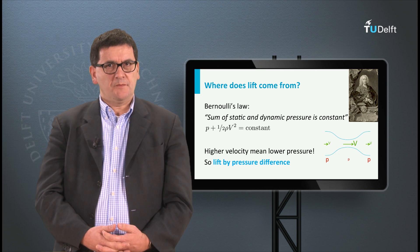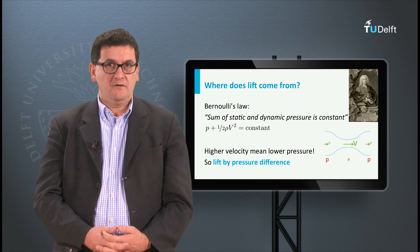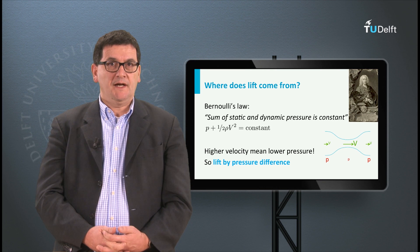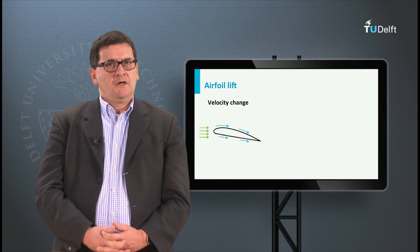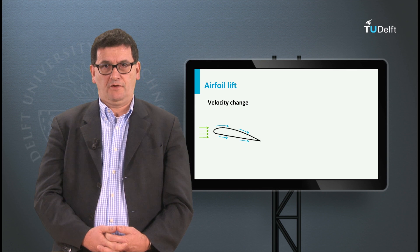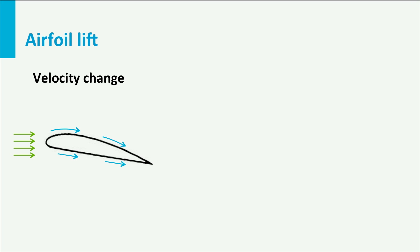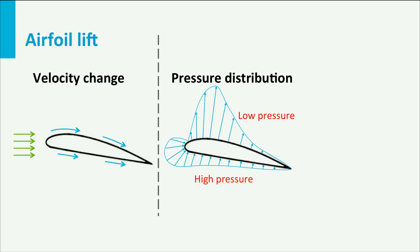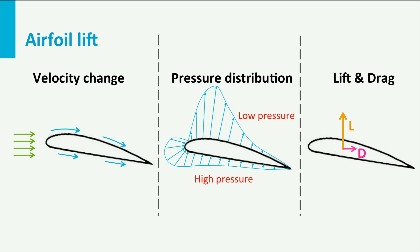Note that Bernoulli's law is applicable for particular situations only, for example for low airspeed and incompressible media. For an airfoil, the airspeed over the airfoil is usually higher than the airspeed below the airfoil. This is due to the camber of the airfoil and the angle of attack. This results in a pressure distribution: there is some overpressure under the airfoil but significant underpressure at the upper surface. This pressure distribution results in a lift force and a drag force.